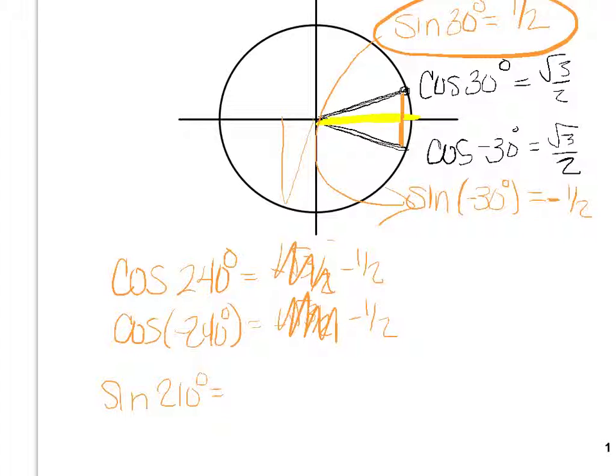So sine of 210, that would be right there. Sine of 210 would be negative 1 half. Sine of negative 210 would be positive 1 half. So I still use the same number, but I switch the sign.